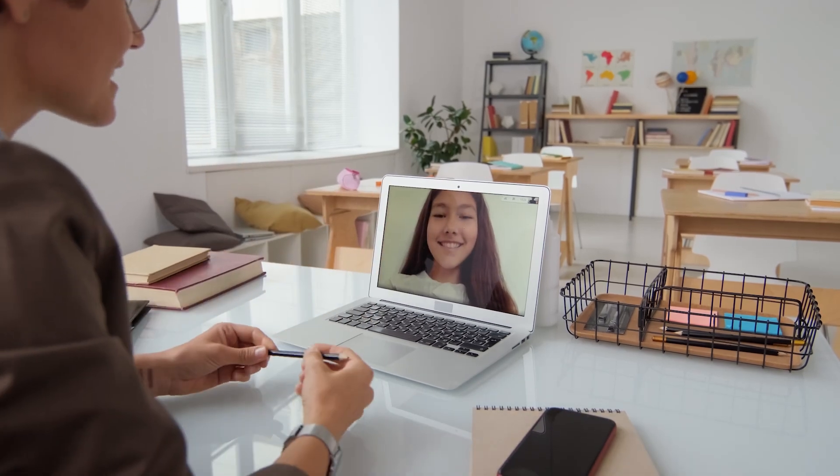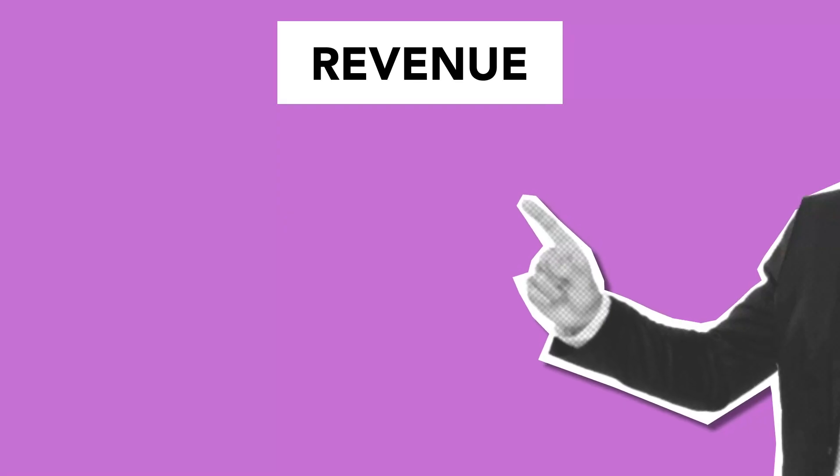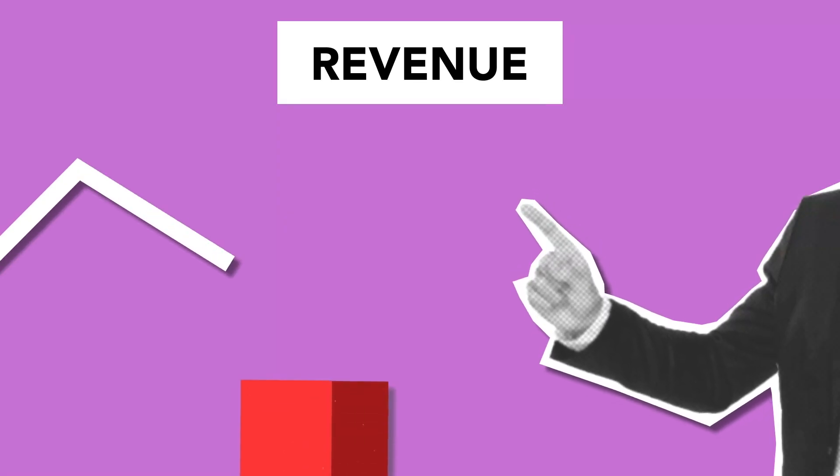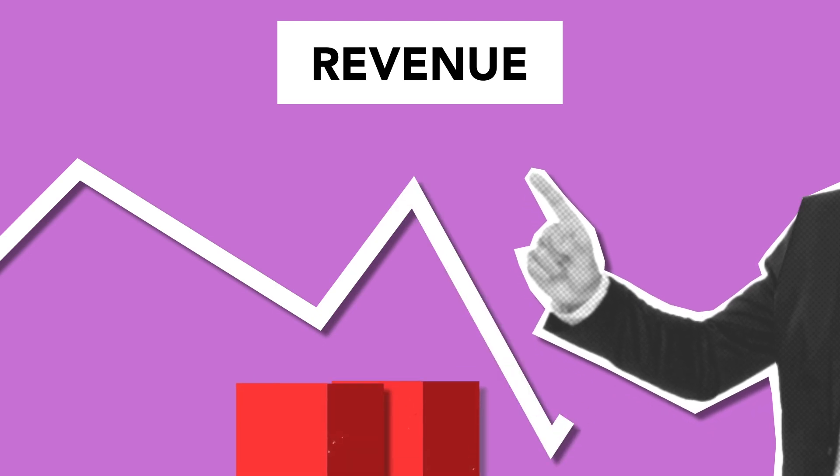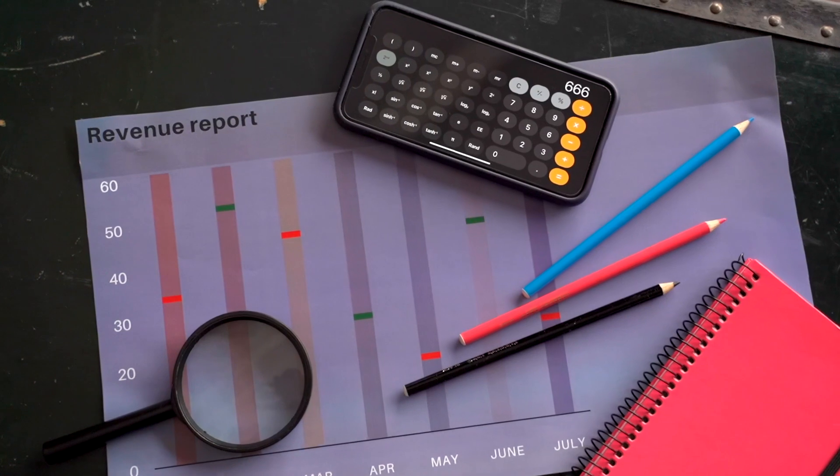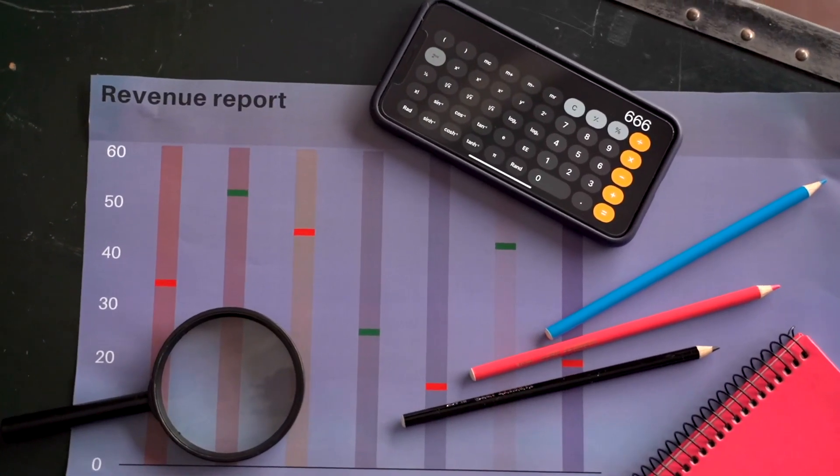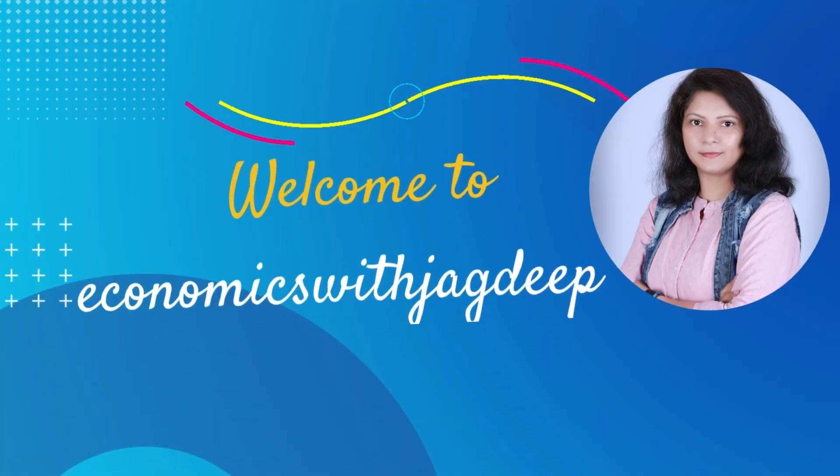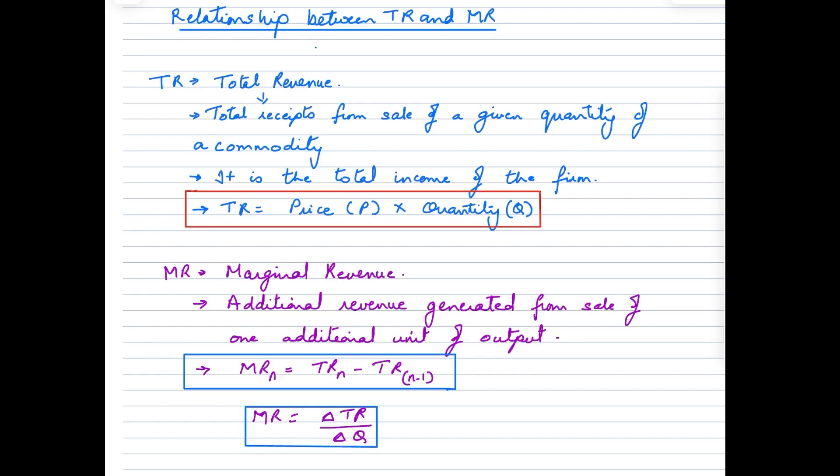Hello students, welcome back to my channel. In today's video we'll be talking about the relationship between TR and MR. The R stands for revenue, which is the income generated by a business after selling whatever it produces. Let's take a look at what TR and MR are before we study their relationship.